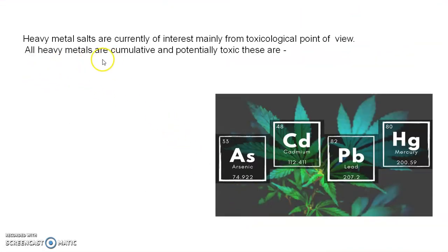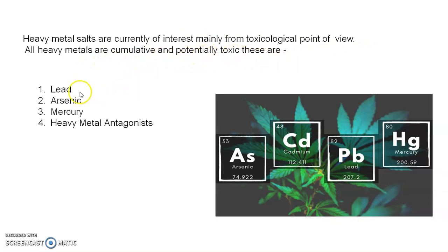First of all, we see what are heavy metal salts. Heavy metal salts are currently of interest mainly from the toxicological point of view. All heavy metals are cumulative and potentially toxic. These are lead, mercury, arsenic, and we will also see the different heavy metal antagonists.